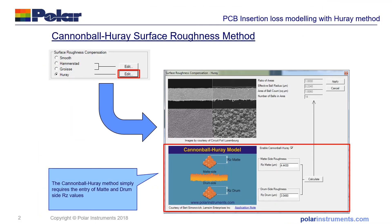This screenshot from Speedstack shows you the four techniques available for surface roughness compensation when modelling insertion loss. Smooth, which as it says is for modelling smooth traces. Hammerstad is a method which has been around for a long time, around 40 to 50 years, and can model up to 4 to 8 gigahertz on reasonably smooth to medium-smooth copper.